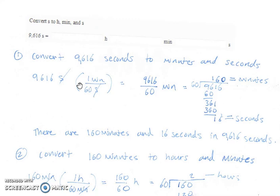Then we multiply 9,616 by 1 and divide by 60 to see how many minutes. When we do the division by hand it's easier to see how many minutes and seconds are in this problem.